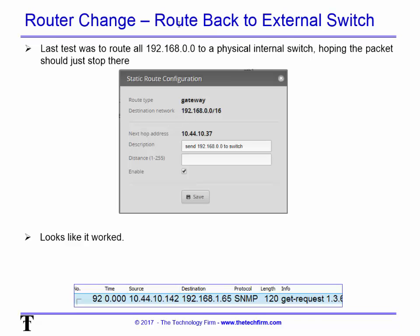Next we tried routing all 192.168.0.0 traffic to an external switch — literally a switch sitting there at 10.44.10.37. The idea was that even though it's not routing, the traffic would go somewhere and just die. And it looked like it worked: when I sent out the request, I no longer saw the ICMP error message.